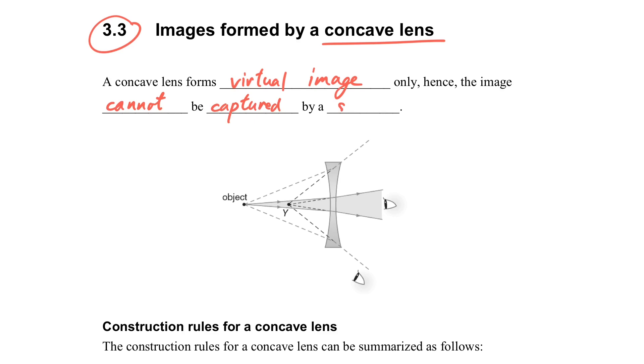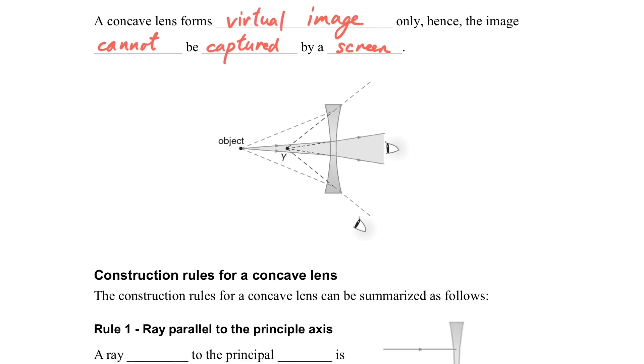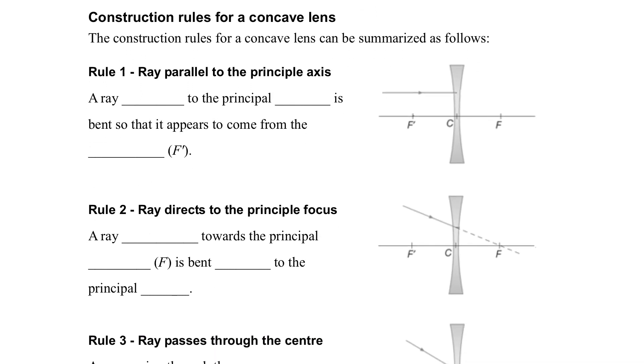By definition, virtual image is the image that cannot be captured by a screen. Here, the most important thing we have to know is to construct the ray diagram related to the concave lens.